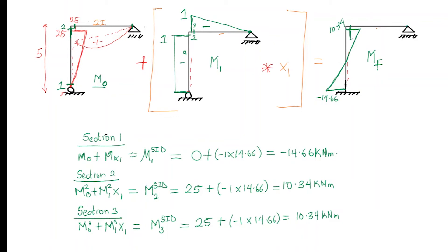I have short dashes, and because there is a distributed load I'm going to add on top of it the second-order parabola. That's our final moment diagram for the statically indeterminate structure.